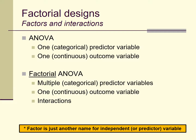By the way, the word 'factor' is just another name for the independent or predictor variables. Sometimes it's confusing — people hear 'independent variable' in one class, 'predictor variable' in another, and 'factor' in yet another class. It's easy to miss the fact that those are all referring to the same thing: predictor variables, especially categorical predictor variables approached from an ANOVA perspective.